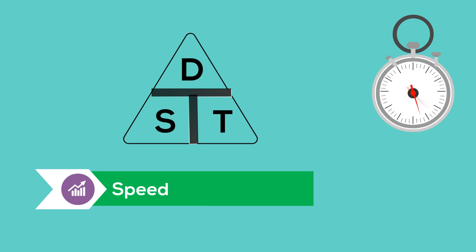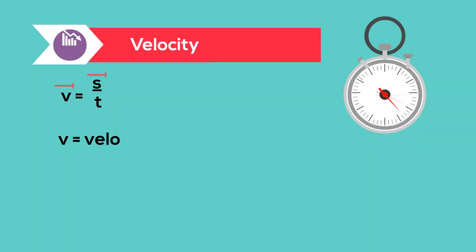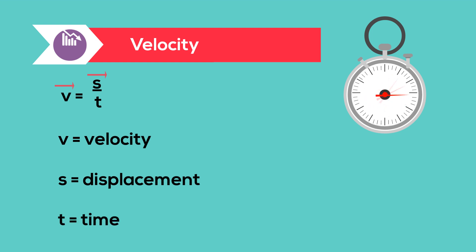If you're familiar with the speed triangle of distance, speed, and time, then you can easily calculate average velocity, but it includes a direction. Here's the formula for velocity. The V represents velocity, and the arrow above tells you that it is a vector, which measures magnitude and direction. The S equals displacement, and it also is a vector — it measures the distance and direction — and T equals a change in time. Let's work an example problem.